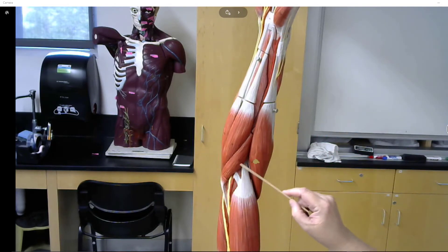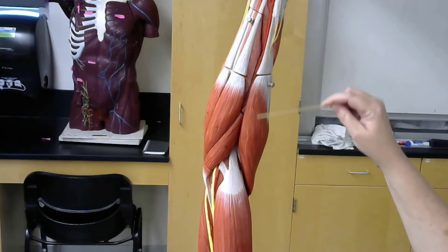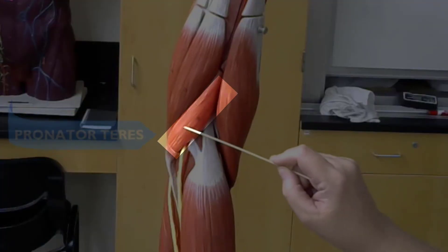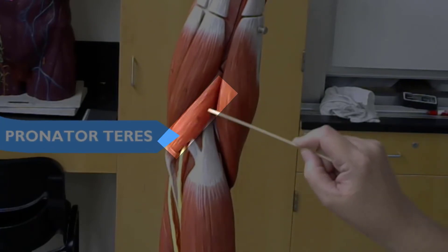So, this little muscle right here. This is the brachioradialis, and this is going to be the pronator teres, the pronator teres.